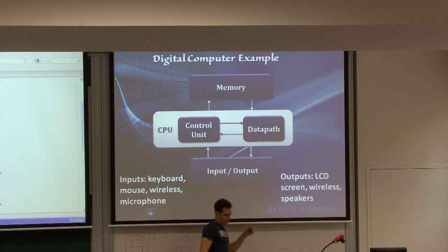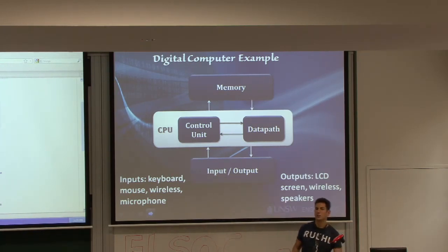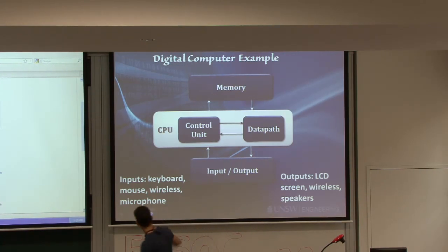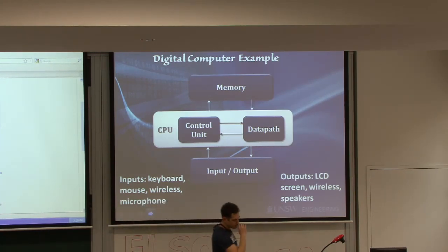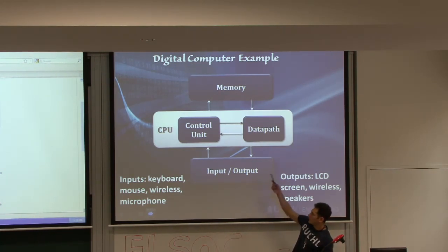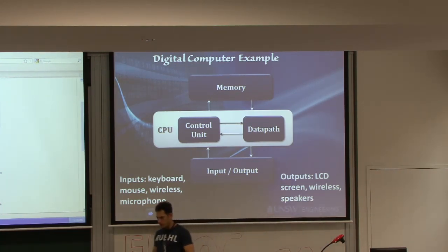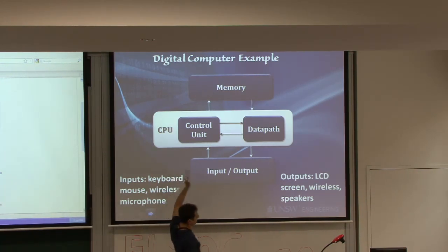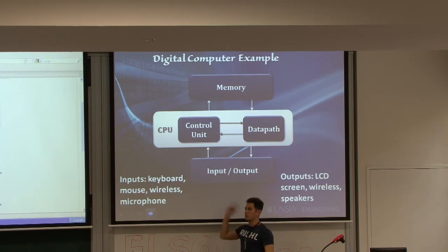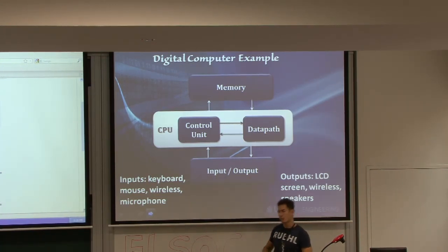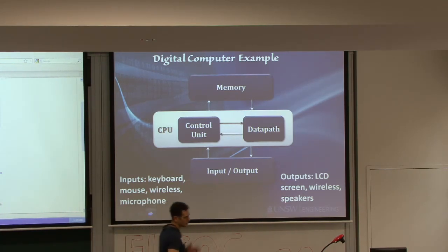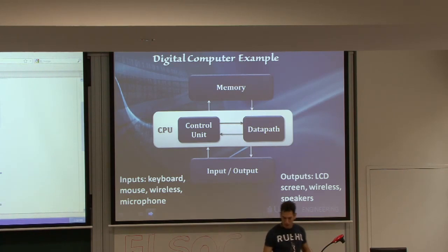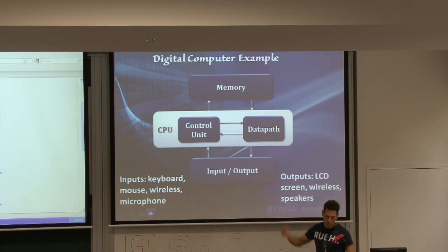Internally, the data path is the main block that actually makes all the computations — the computation between whatever the inputs are and whatever is in memory. This is, in a way, the heart of the computer, and this is exactly what we learn about in week 10. Alongside that is the control unit, whose job is to direct the right signals to the right places. If an input comes into the CPU, the control unit directs those signals to the right places in the data path, asks memory for more information, and hands it to the data path to execute.